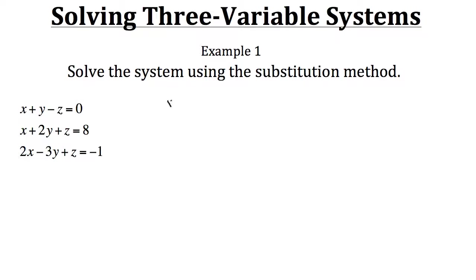If we have x plus y minus z equals zero, we can isolate z by adding it to the other side so it's all by itself. It cancels on the left, and we add z to the other side, leaving us with z equaling x plus y. Now that we know x plus y is equivalent to z, we can plug that expression in wherever we see a z variable.